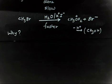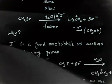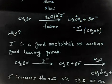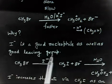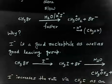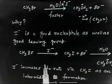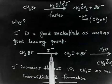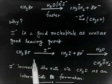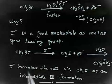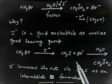I- is a good nucleophile as well as a good leaving group, and that's why the rate is increasing. In the first step, I- is a good nucleophile, so it attacks and displaces Br-, leaving Br- as the leaving group. So I- attacks and Br- goes.